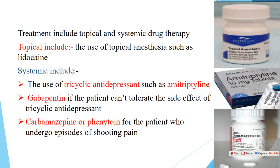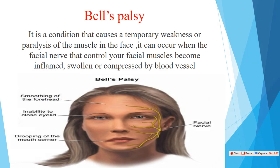If the patient suffers from post-herpetic neuralgia, treatment includes topical and systemic options. Topical: topical anesthesia such as lidocaine. Systemic: tricyclic antidepressants such as amitriptyline, or gabapentin if the patient cannot tolerate the side effects of tricyclic antidepressants. For patients experiencing episodes of shooting pain, carbamazepine or phenytoin is the most effective drug for post-herpetic neuralgia.